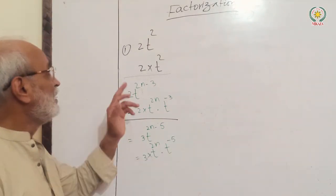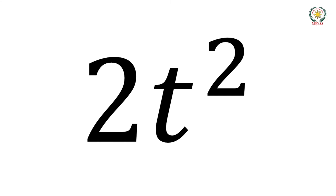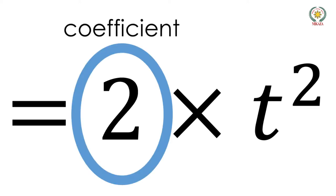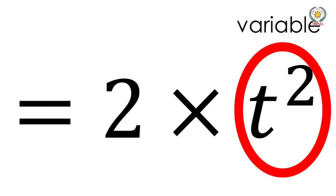Now, look here. Suppose we have 2t squared. 2t squared means 2 multiplied by t squared. So 2 is the coefficient here, and the coefficient will be multiplied by t squared.